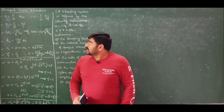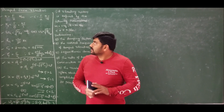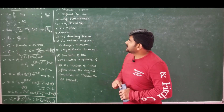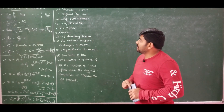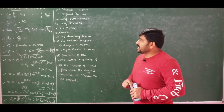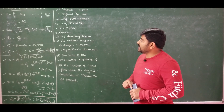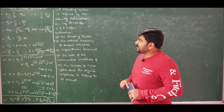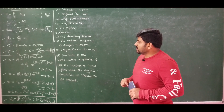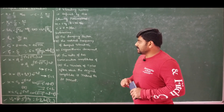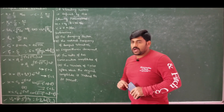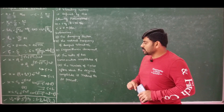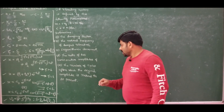Let us now address problem number one. A vibrating system is defined by the following parameters: mass m = 3 kg, stiffness k = 100 N/m, and damping coefficient c = 3 N·s/m. Determine: the damping factor, the natural frequency of damped vibration, the logarithmic decrement, the ratio of two successive amplitudes, and the number of cycles after which the original amplitude is reduced to 20%.